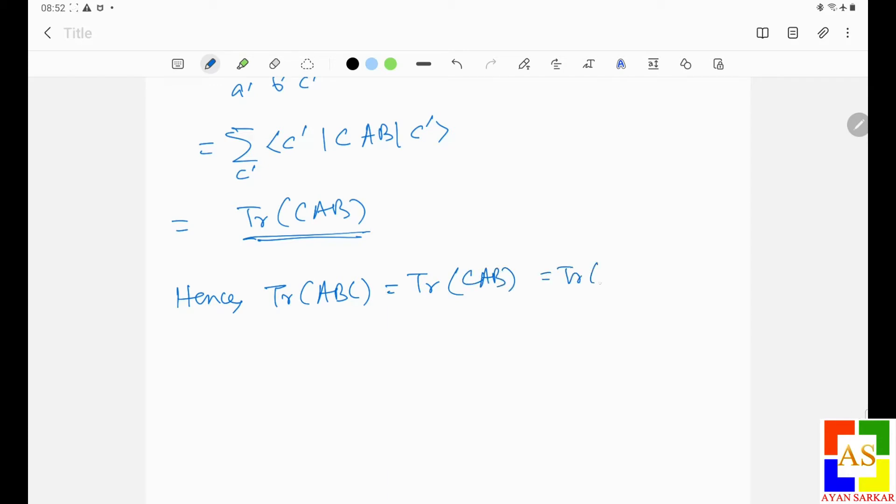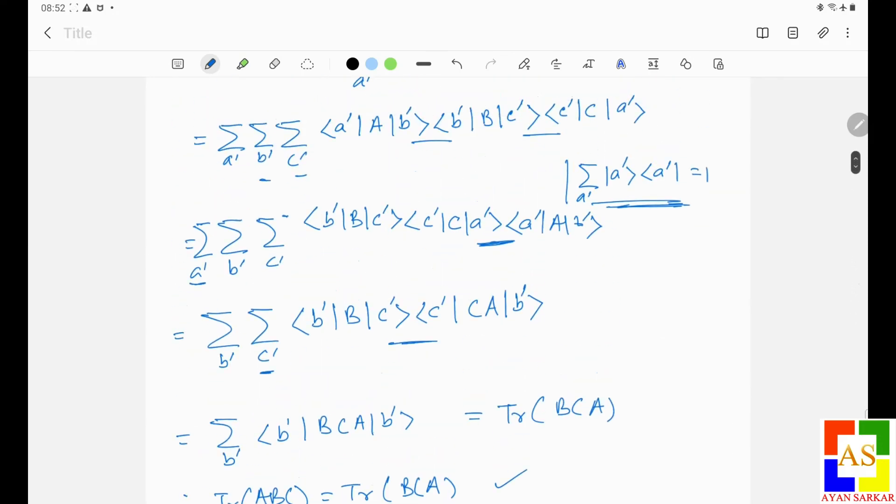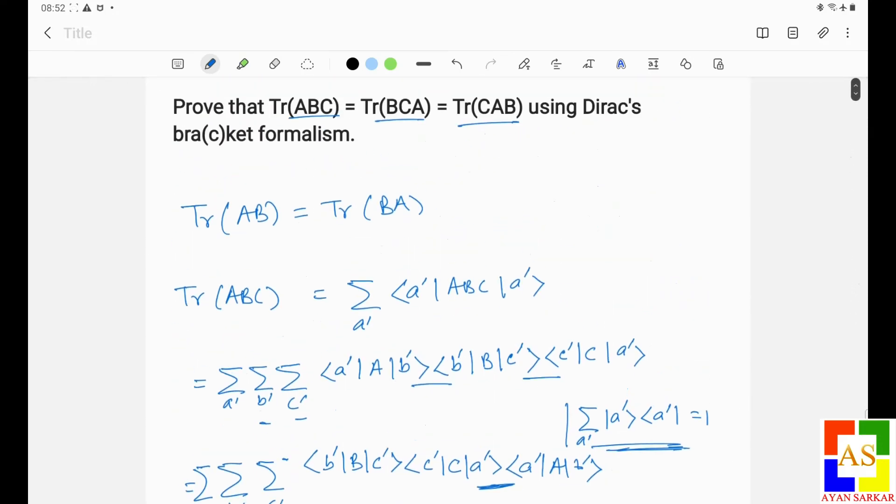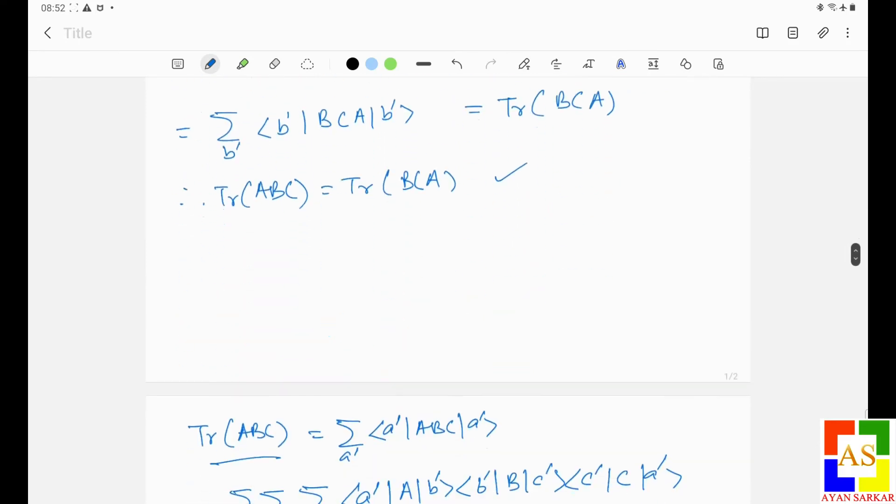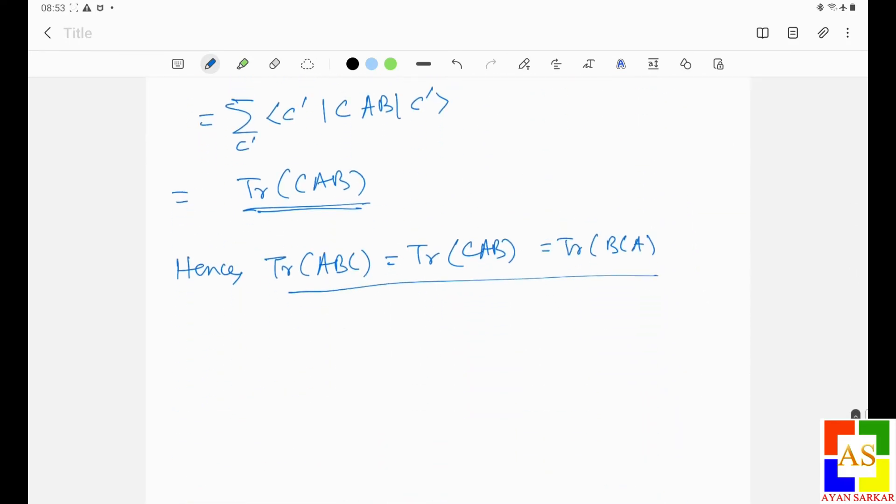Hence we can write trace of ABC is equal to trace of CAB is equal to trace of BCA. So hope you have understood this proof using Dirac's formalism. If you have liked this, please don't forget to like this video and share this video with your friends who require it, and please don't forget to subscribe my channel. Thanks for watching.